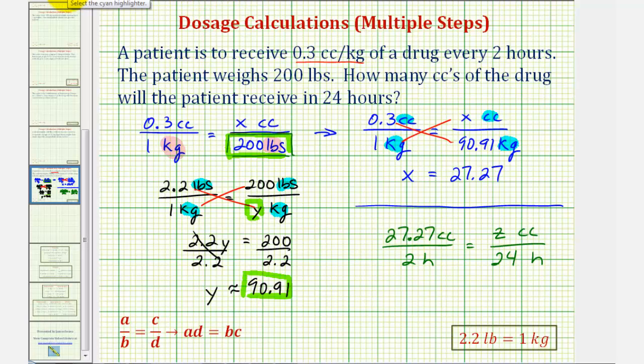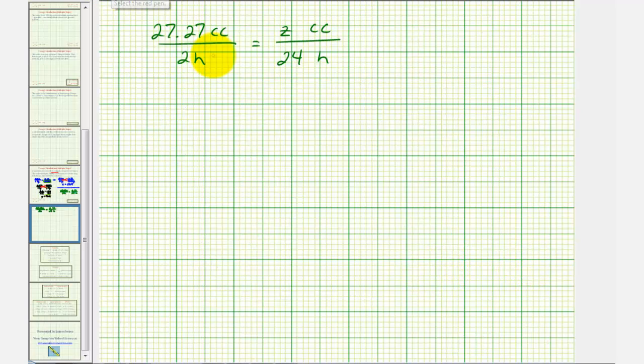Notice how in this proportion, we do have the same units on top, and the same units on the bottom. So we can go ahead and cross multiply and solve for z. Let's go ahead and do this on the next slide. Again, leaving off the units, we would have 2 times z, that would be 2z, must equal 27.27 times 24.